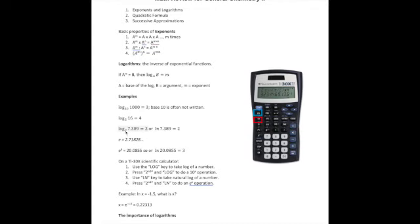So log base e is what we call natural log. So a lot of times, instead of writing log base e, it would just be written as ln, which stands for natural log. So if I write log base e of the number 7.389 as my argument, I'll find that that's equal to 2. That's because e to the power of 2 or e squared is equal to 7.389. Another way to write this would be to say ln of 7.389 is equal to 2.